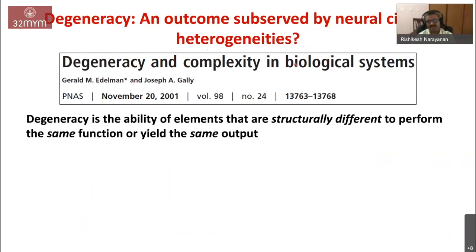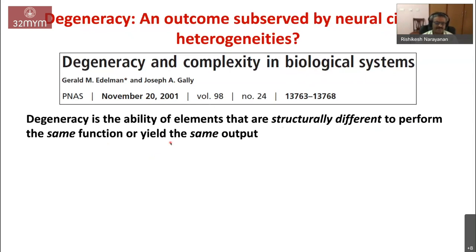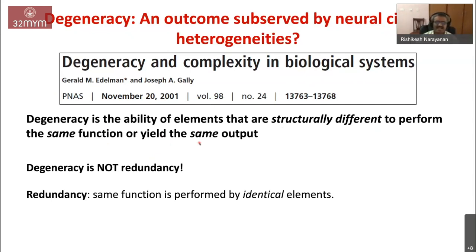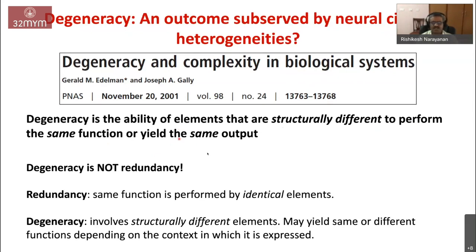What exactly are the functions associated with these heterogeneities? Why are they expressed in neural circuits? One thing I'd like to take up is whether these heterogeneities serve as a mechanism for what is called degeneracy. This influential review by Gerard Edelman — who switched to neuroscience after his Nobel Prize in immunology — published in 2001, defined degeneracy as the ability of elements that are structurally different to perform the same function or yield the same output. Note that this is not redundancy, where the same function is performed by identical elements. Degeneracy involves structurally different elements.